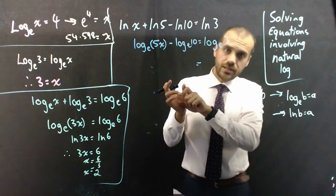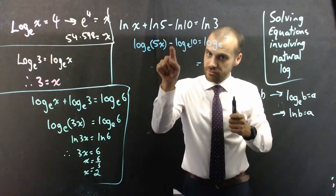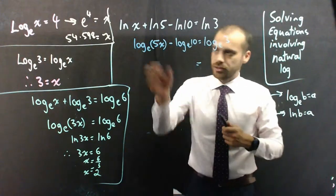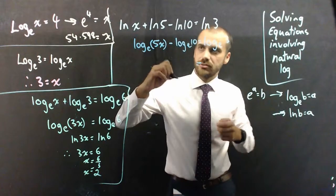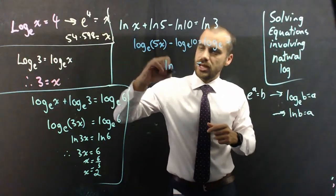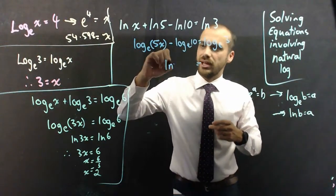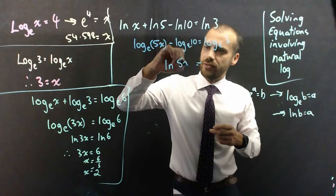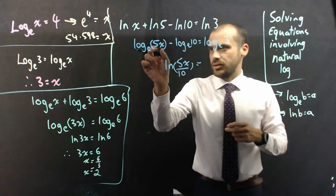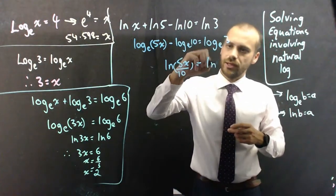I can use one of my other index laws, which says if I have two logs with the same base subtracted from each other, I can divide them. I can divide those exponents. So, just to really spice things up, I'll switch back to the ln form. So, I'll say ln equals, oh, sorry, ln 5x over 10. So, I'm taking that, and I'm dividing it by that, all in a single log, ln 3.